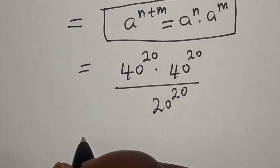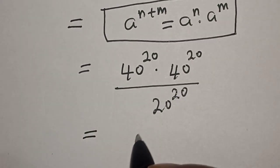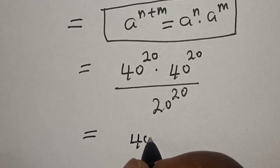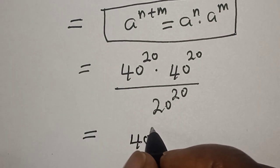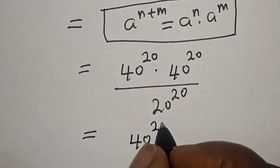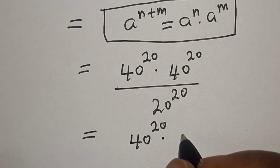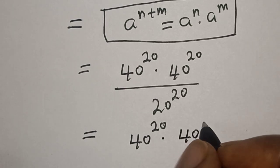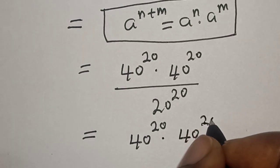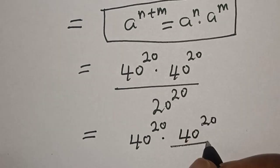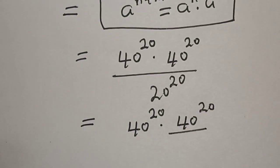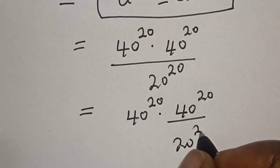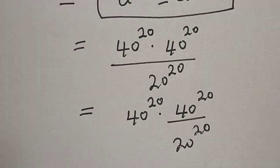Now this is equal to 40 to the power of 20 multiplied by 40 to the power of 20 over 20 to the power of 20.